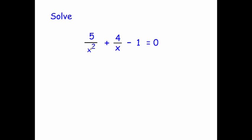Well 5 over x squared times x squared, that's just going to leave you with 5. Plus 4 over x times by x squared, well that would be 4 x squared over x. The x squared divided by x, that's just going to leave you with 4 x. So that's going to be plus 4 x.